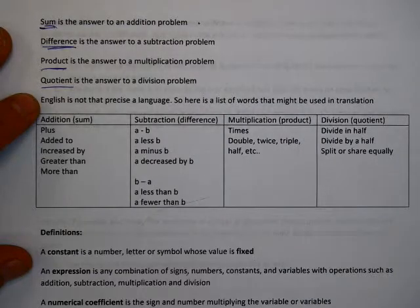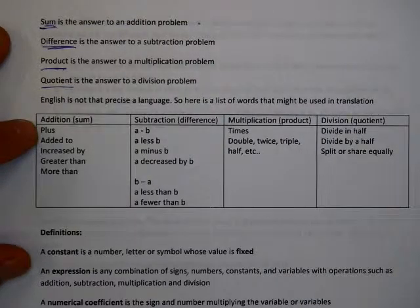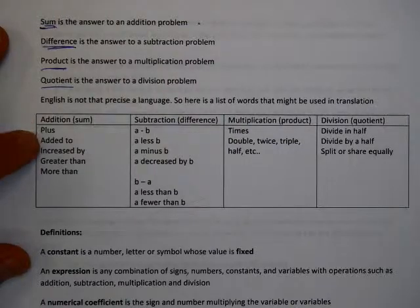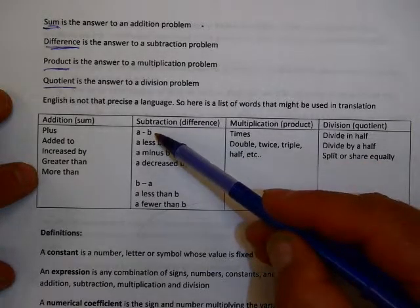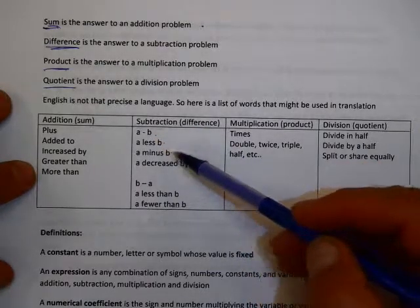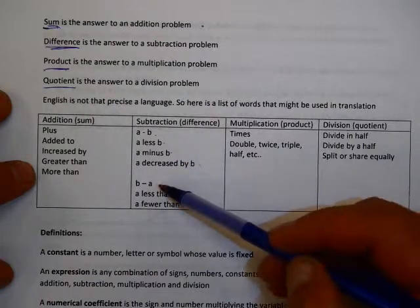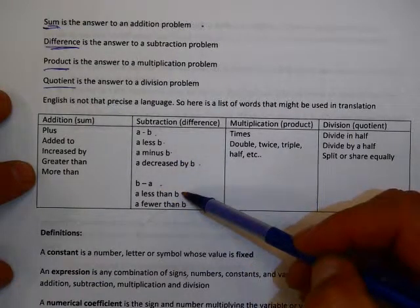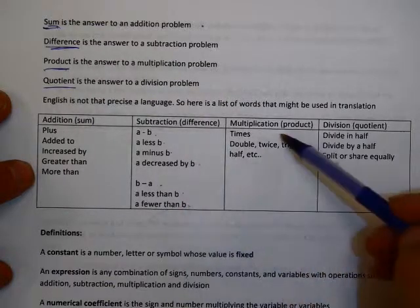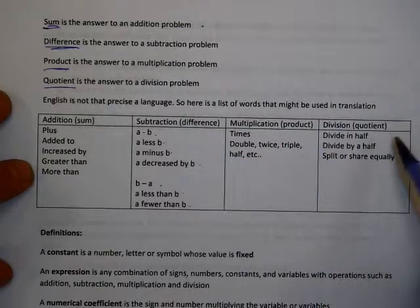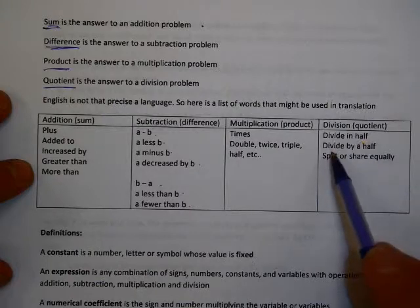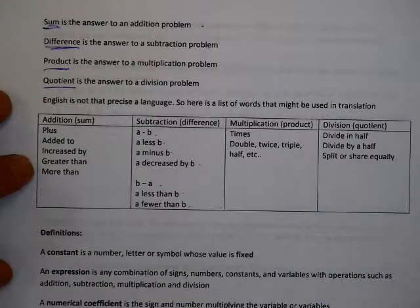English is not that precise a language, so here are additional words used as synonyms. Addition or sum might also be called plus, added to, increased by, greater by, or more than. Subtraction: a minus b, a less b, a decreased by b; and b minus a is the same as a less than b or a fewer than b. Multiplication might use the words times, double, half, twice, or triple. Division or quotient might say divide in half, divide by half, split, or share equally.